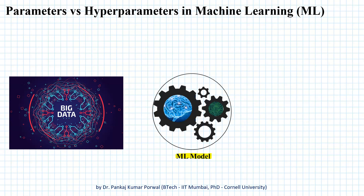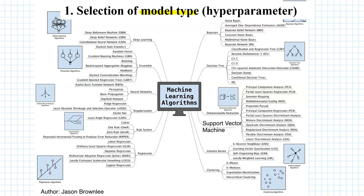But when we talk about selecting a machine learning model, it is not as simple as it sounds because there is a large number of model types available to choose from. And it's not just the large number of model types — even within a particular model, say for example if we select the neural network,